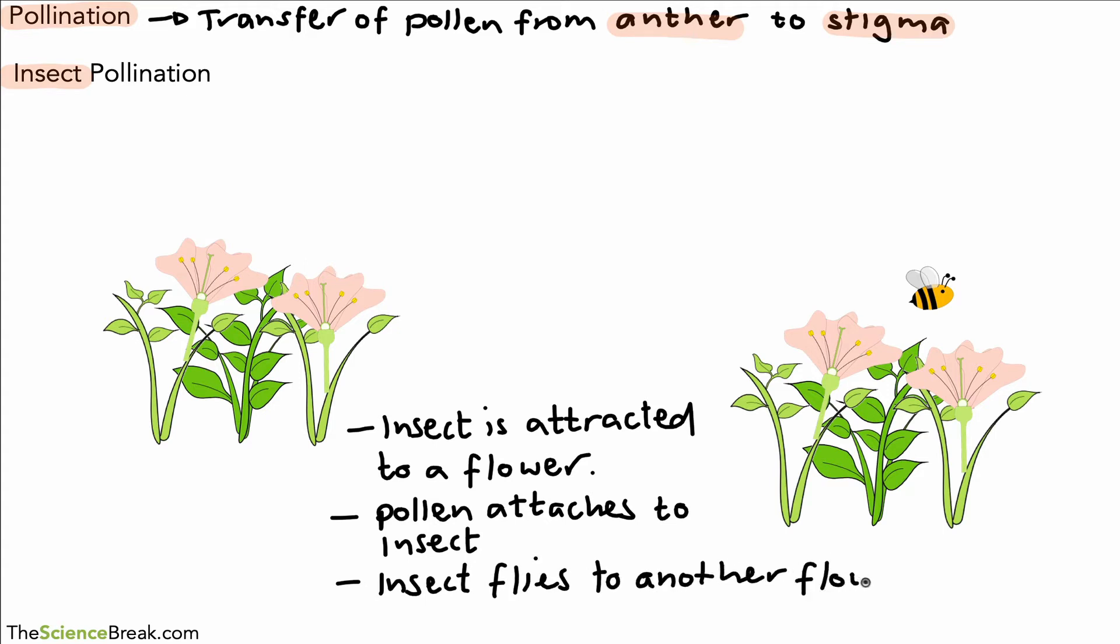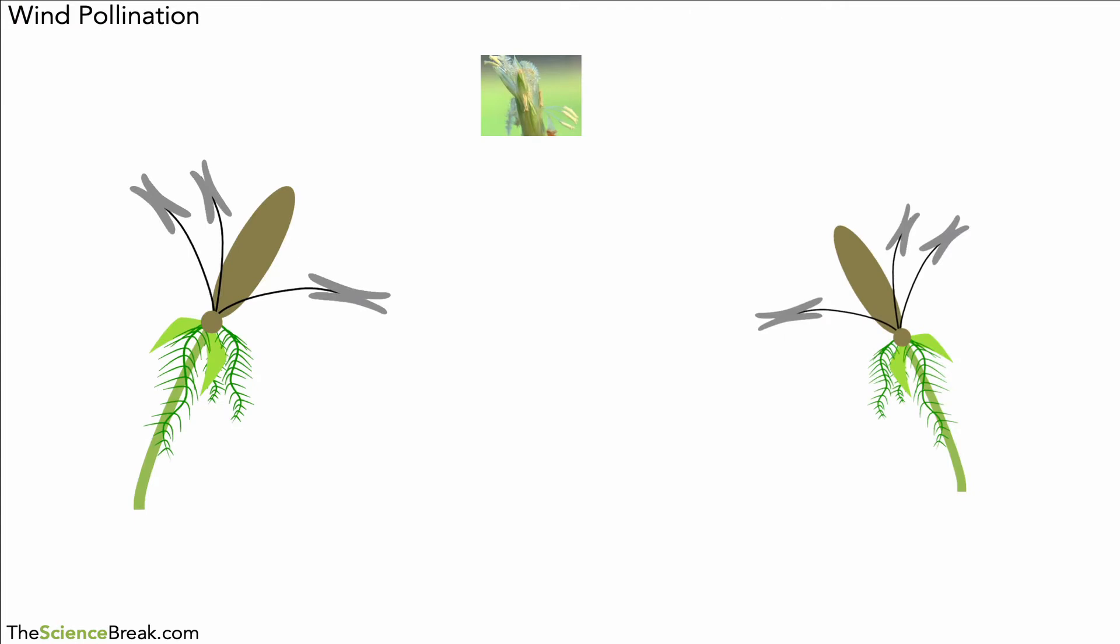The pollen attaches to the stigma, to the stigma of the other flower. So this is how insect pollination happens. Remember, this is just the process of pollination, transferring the pollen.